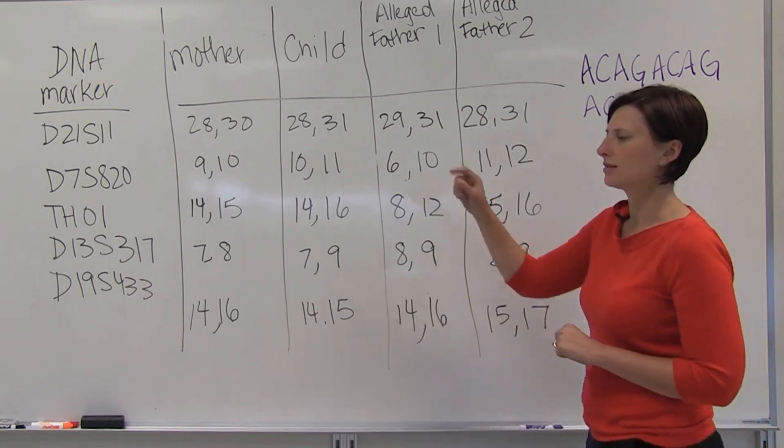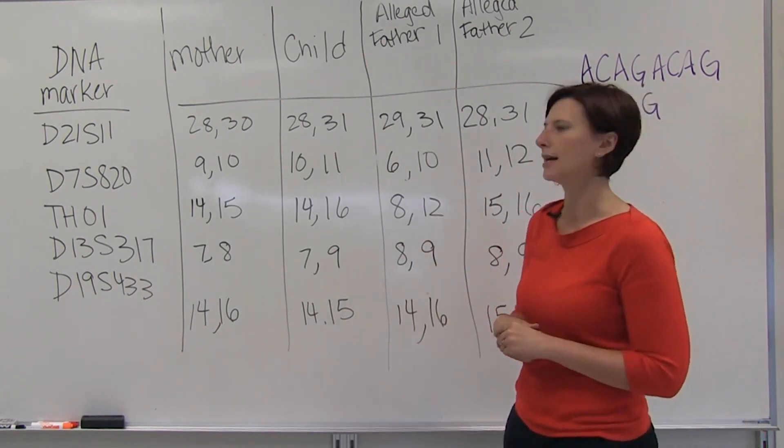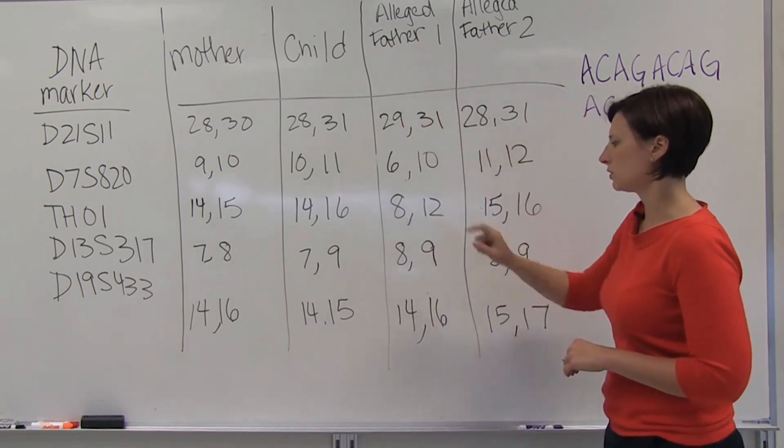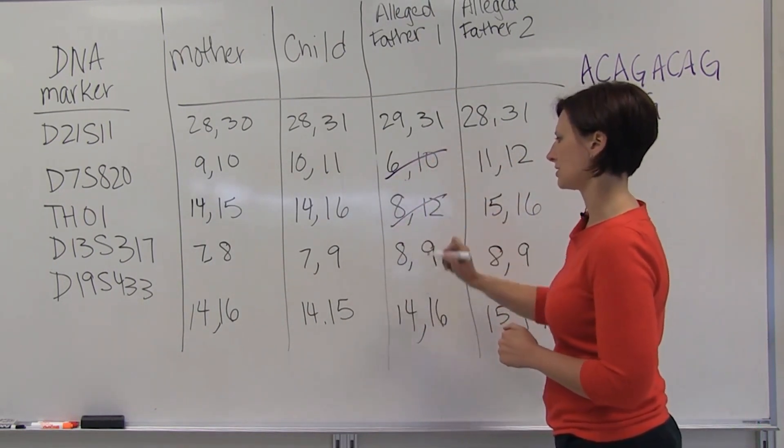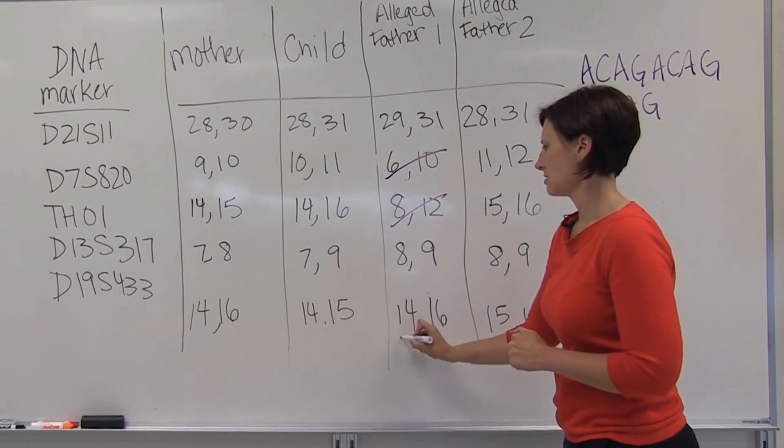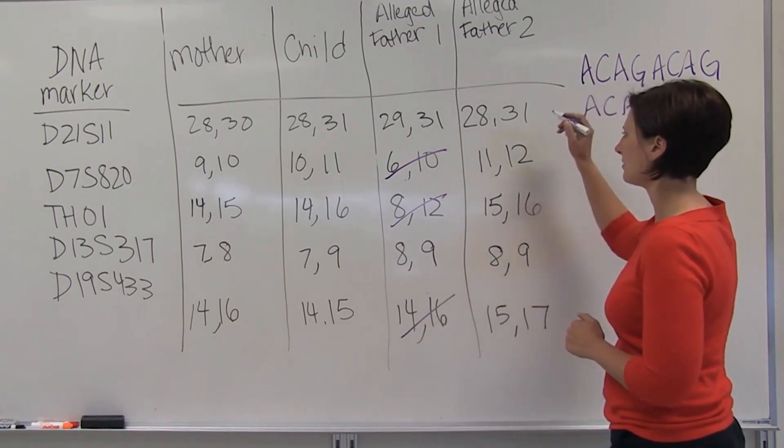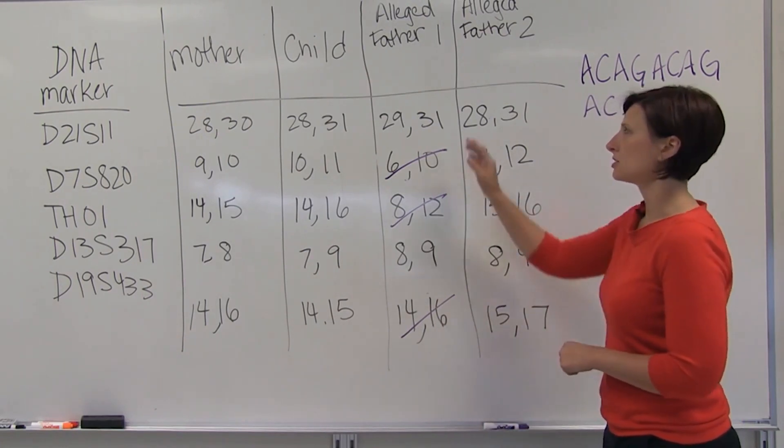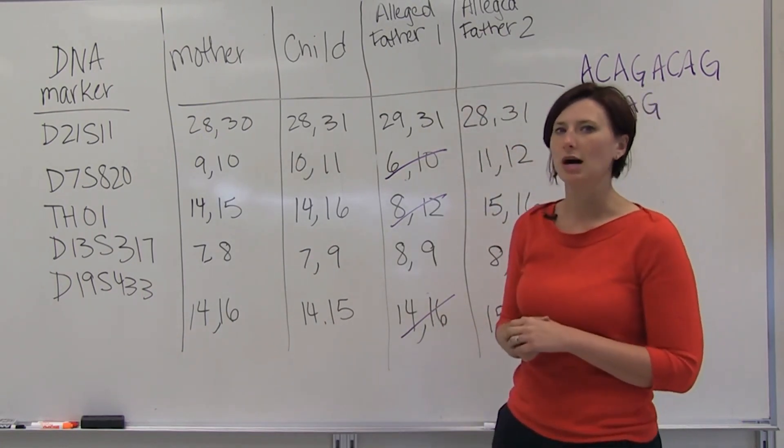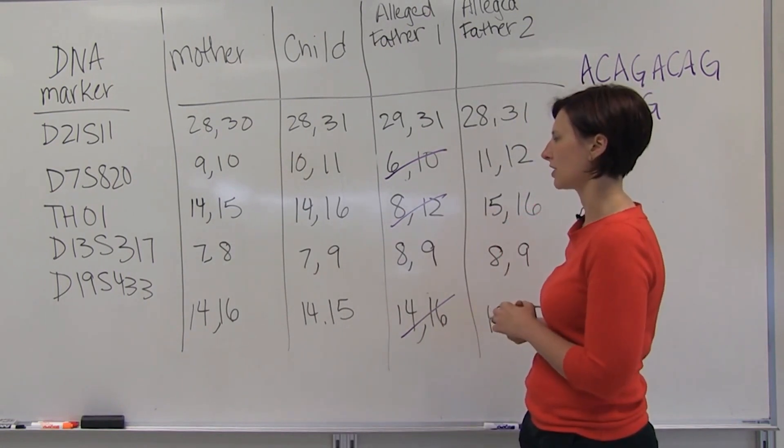So based on these five loci that we've looked at, alleged father 1 was ruled out by several loci, and alleged father 2 matches all the loci we're looking at, so alleged father 2 could possibly be this child's father.